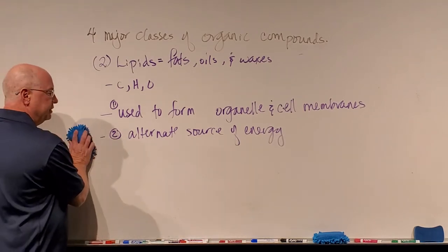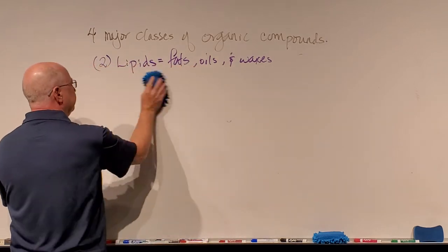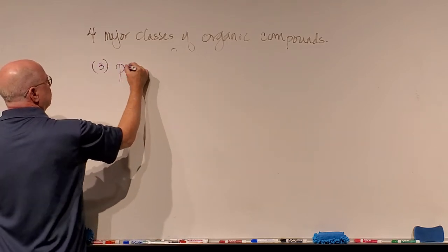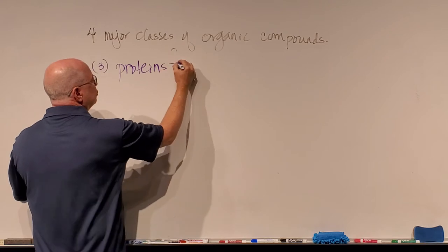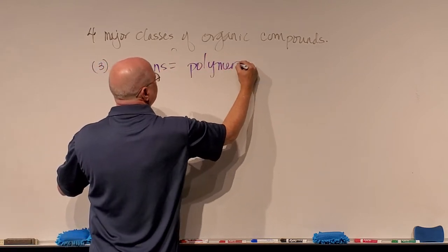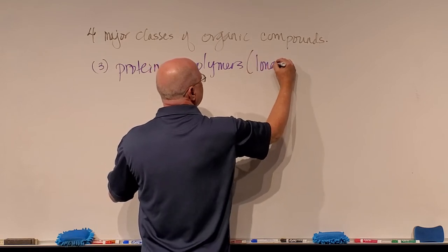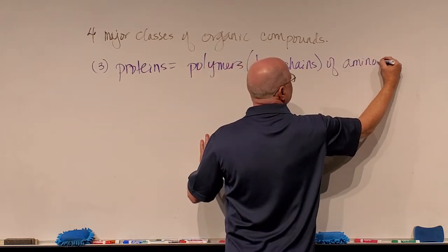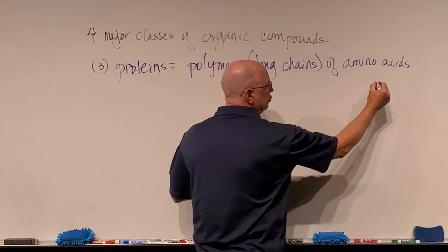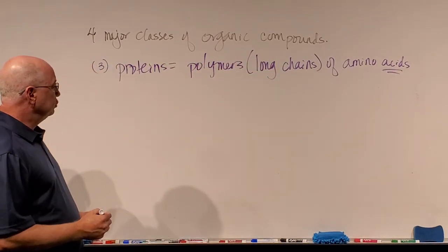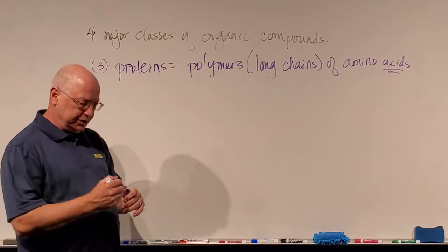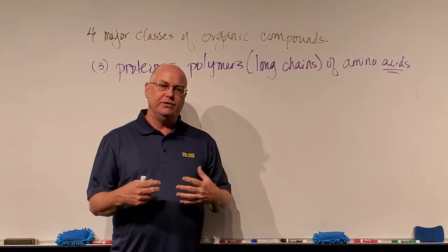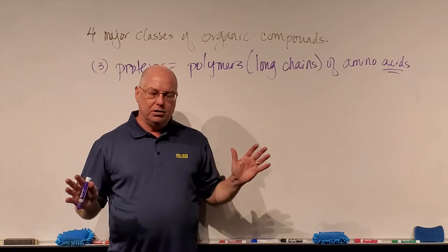The next major organic compound is going to be proteins. Proteins are polymers — or another way to say this is they are long chains of amino acids. One of the things you know about these molecules is they are acidic in nature. So all proteins are long chains of amino acids, made up of these simple units called amino acids.